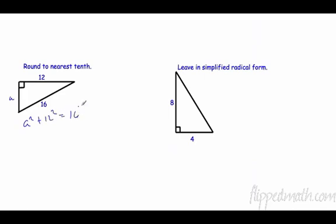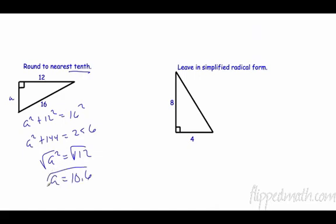12 squared equals c squared. a squared plus 144 equals 256. Subtract 144 and you get 112. Take the square root. In this case we're rounding to the nearest tenth, so we're just going to put it in our calculator and we get 10.6.